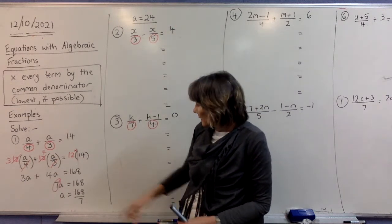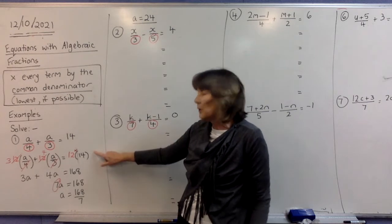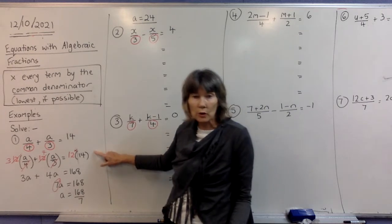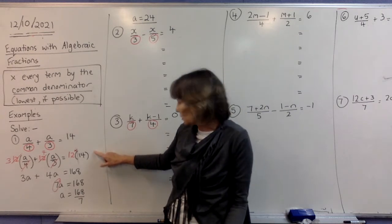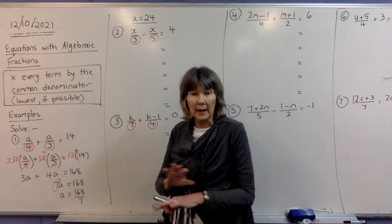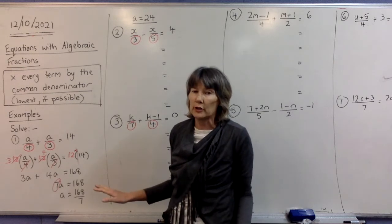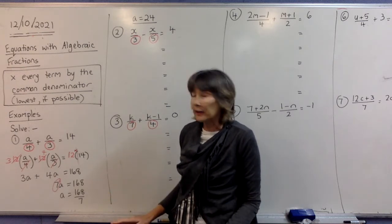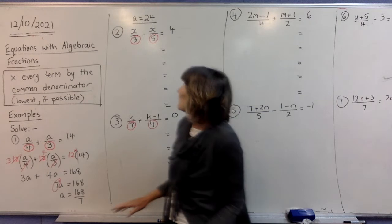The whole beauty of this method is that once you multiply by the common denominator, that next line has no fractions in it. So if you've done it properly, there'll be no fractions left.